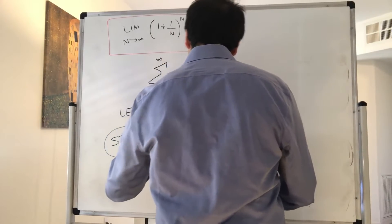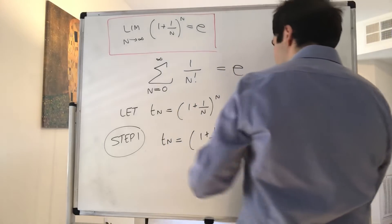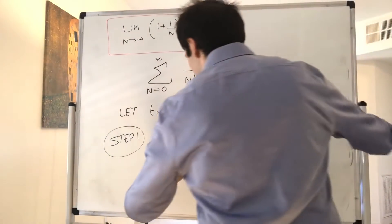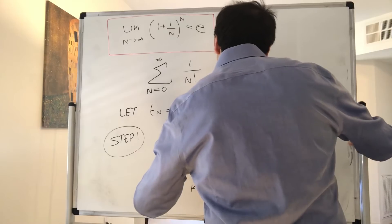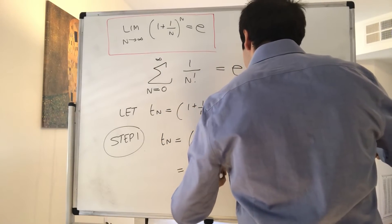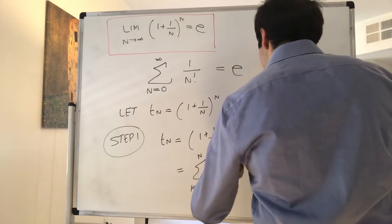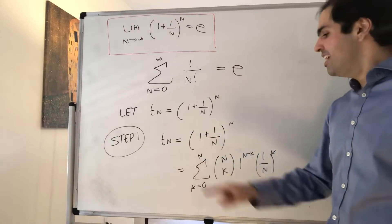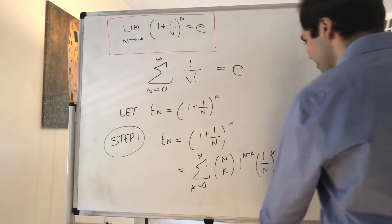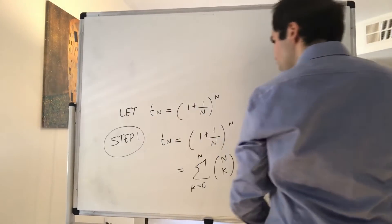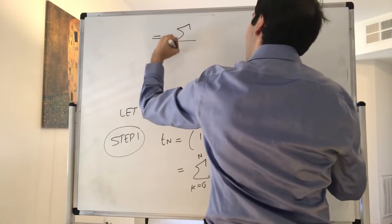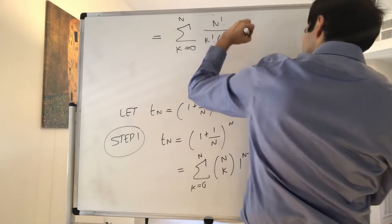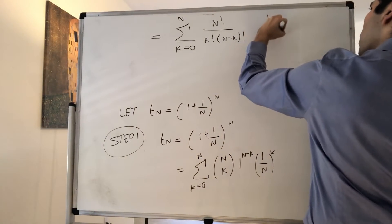Notice that t_n equals 1 plus 1 over n to the nth power. This calls for the binomial theorem, because we have a plus b to the nth power. So this becomes the sum from k equals 0 to n of n choose k, times 1 to the n minus k, times 1 over n to the kth power. That gives us the sum from k equals 0 to n of n factorial over k factorial times n minus k factorial, times 1 over n to the k.